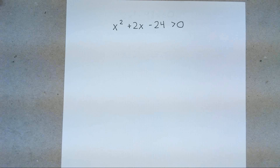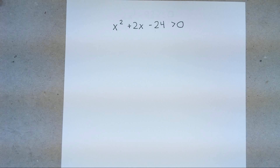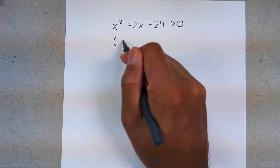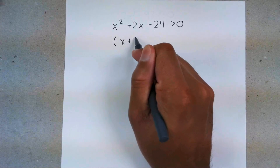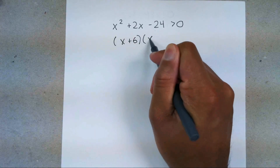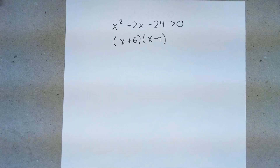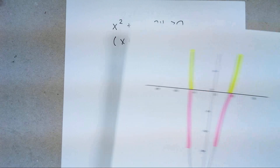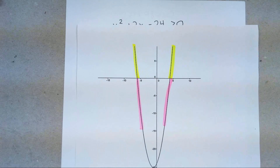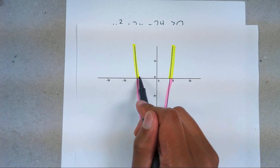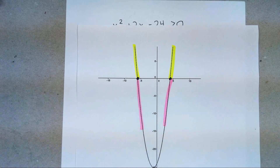The problem is they don't want you to just graph this — they want you to use algebra. So because they want us to use algebra, we have to factor out. Your first step is always to factor it out. This is going to factor out to (x + 6)(x − 4). Now if we go back to this graph, the points where everything is going to change are your x-intercepts. The reason why we have to factor out is because we want to figure out where these x-intercepts are.